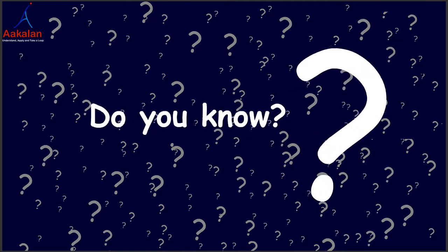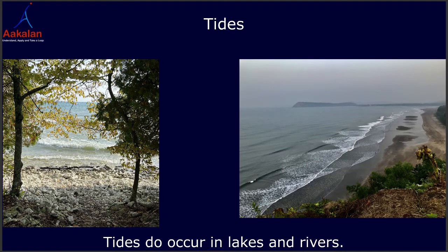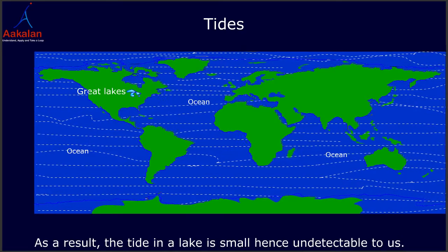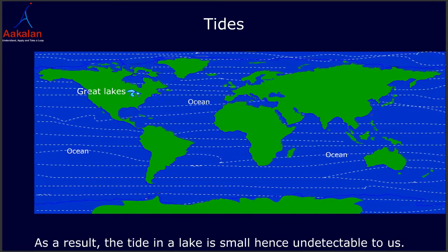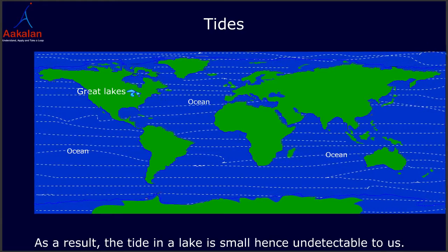Do you know why tides occur only in seas and oceans but not in lakes or other water bodies? Tides do occur in lakes and rivers, but the water in lakes and ponds is much smaller in comparison with ocean water. As a result, the tide in a lake is small and hence undetectable to us. To know some of the facts about tides, we need first to see what ocean tides are.